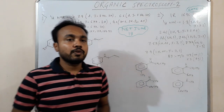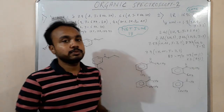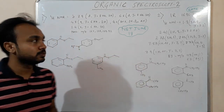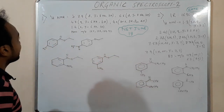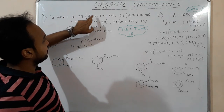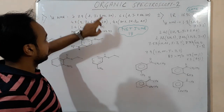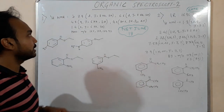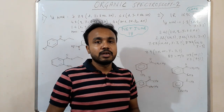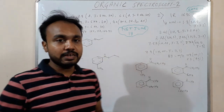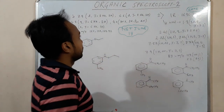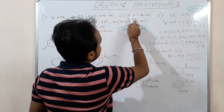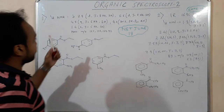Good afternoon friends. Now I am going to discuss two problems based on structure determination using NMR, IR, and mass spectrometry. In the first problem, we have a delta value of 7.9, doublet, J value 8 Hz, and 2 hydrogens. J value of 8 means ortho coupling. For ortho coupling the J value is around 7 to 8, for meta coupling it's around 3, and para coupling we neglect because it's very small. Here also we have ortho coupling at 6.6, with 2 hydrogens.